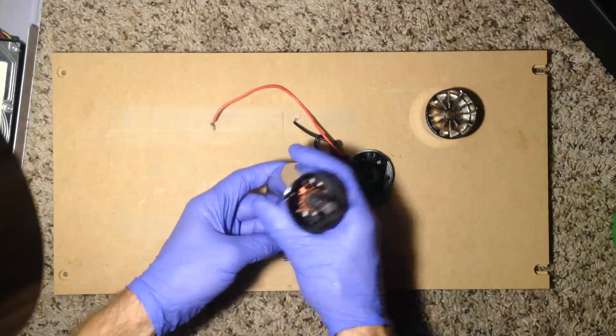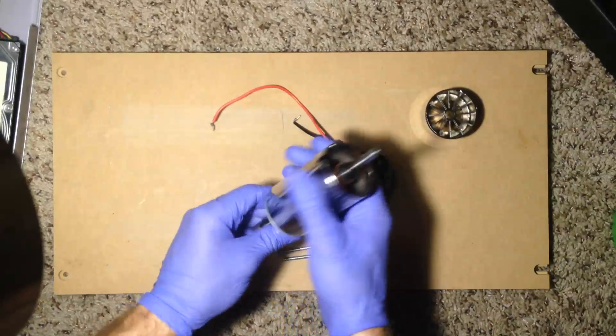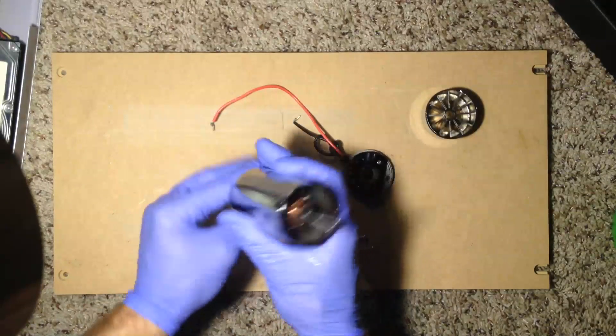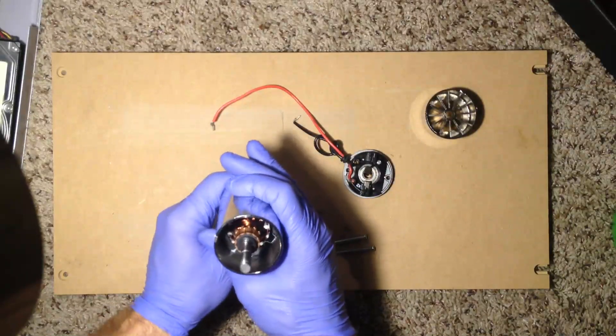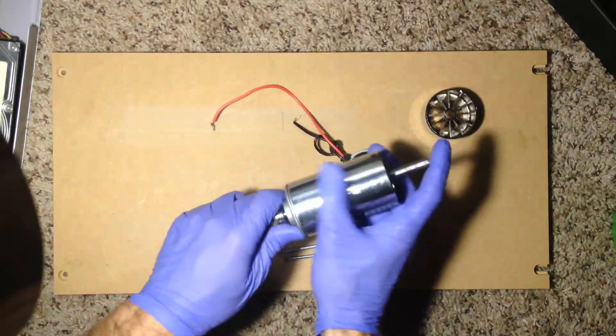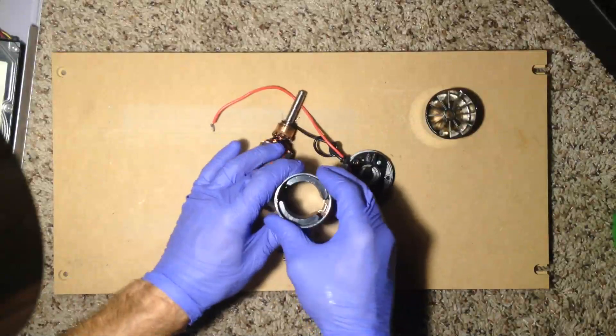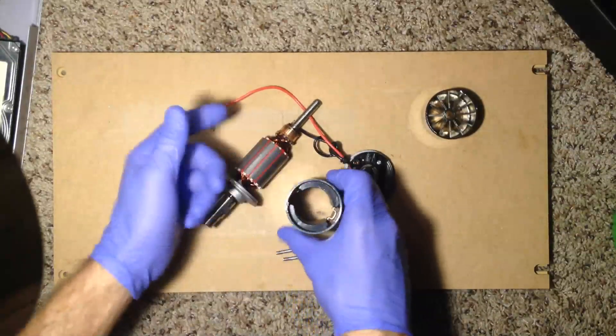Of course, the magnetism exponentially decays as you get away. So you want it to be as close as possible and still work in your design tolerances. In this case, the metal itself actually deflects enough. It's quite thick.